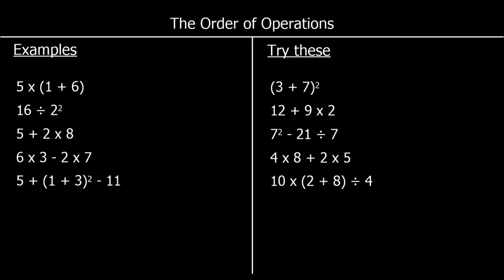The order of operations. We can call it BIDMAS. Brackets come first, then indices or powers, then division and multiplication together, and then addition and subtraction together. We do brackets first, then indices, then division and multiplication from left to right, and addition and subtraction from left to right.